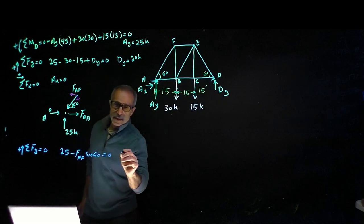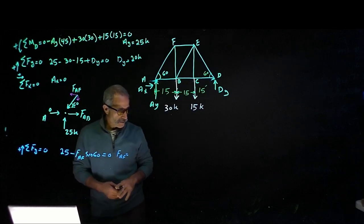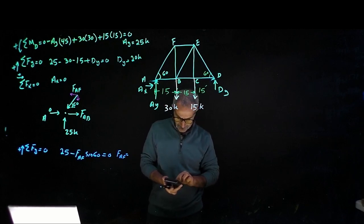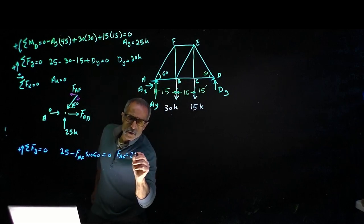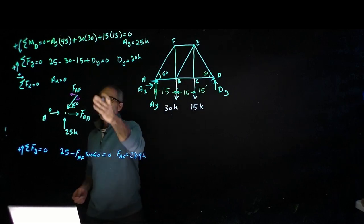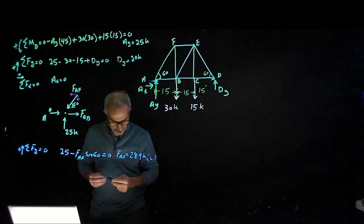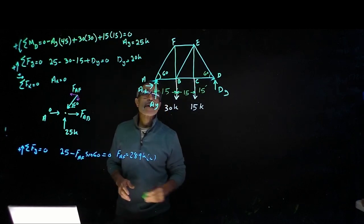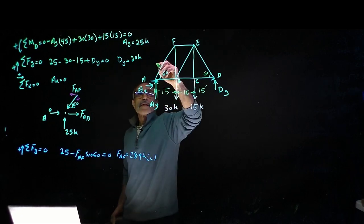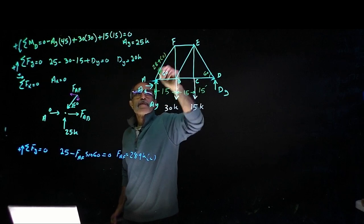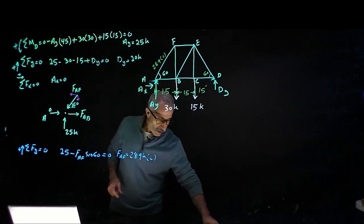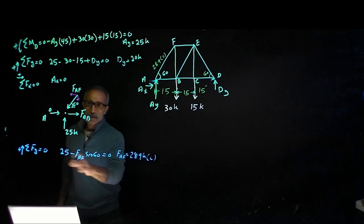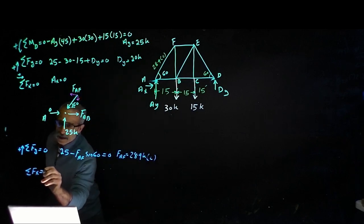From that calculation, F of AF comes out to 28.9 kips, and because we assumed compression, it is in compression. So I'm going to write that up: 28.9 kips in compression. Now that I have that, I can go ahead and find F of AB using summation FX. Summation FX equals 0.